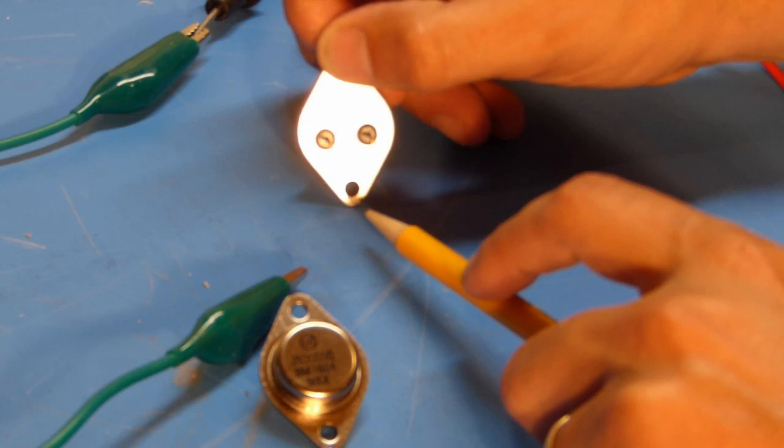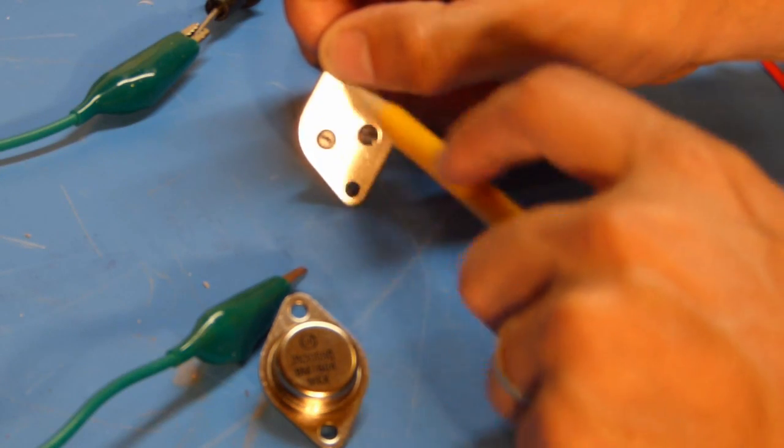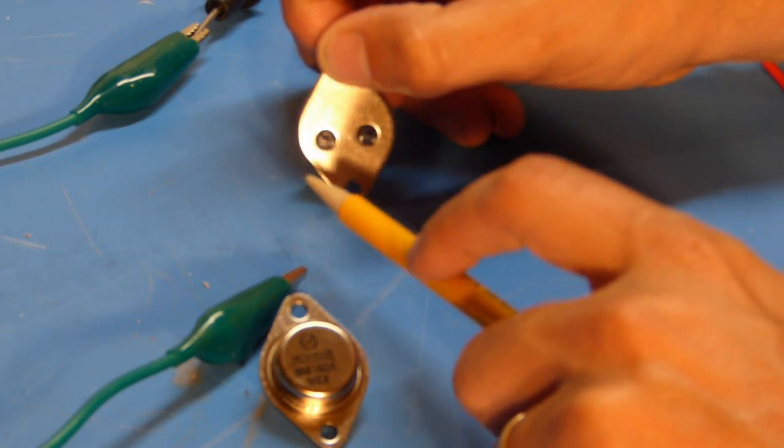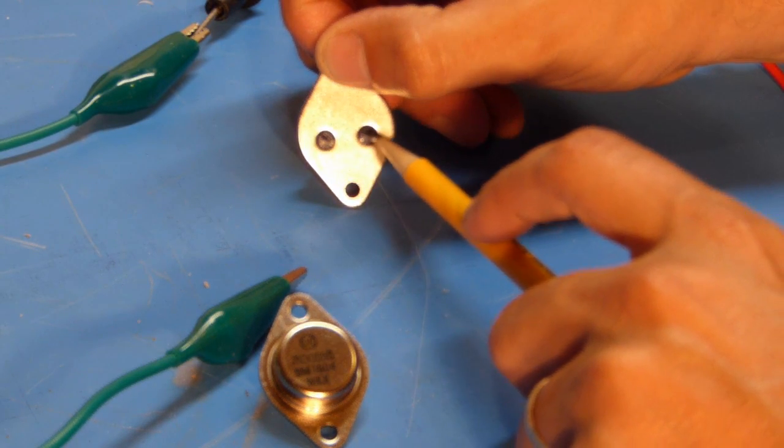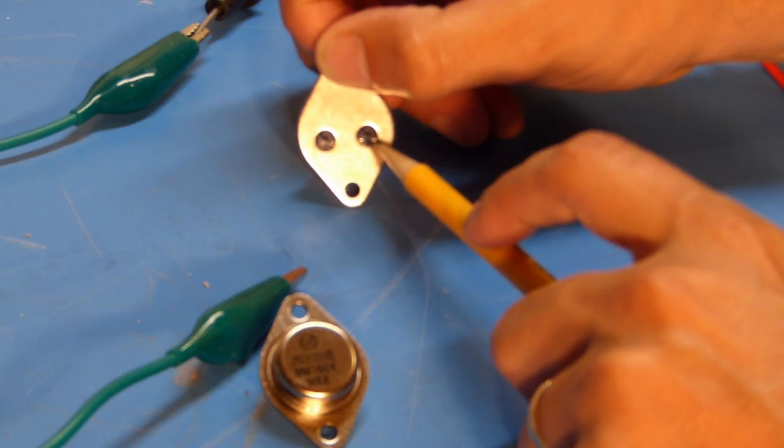So when the transistor is oriented like this the case is the collector, this pin over here on the left is the emitter and this pin on the right is the base.